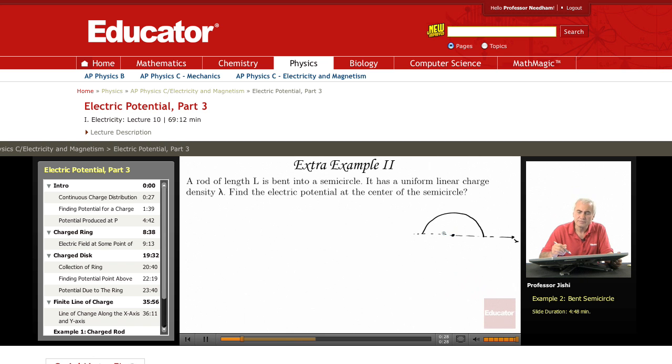So now we can pick any dq, and there'll be lambda times d, whatever this length could be. The length of the arc is DL, so this is lambda DL. This is at a distance r from the center point.